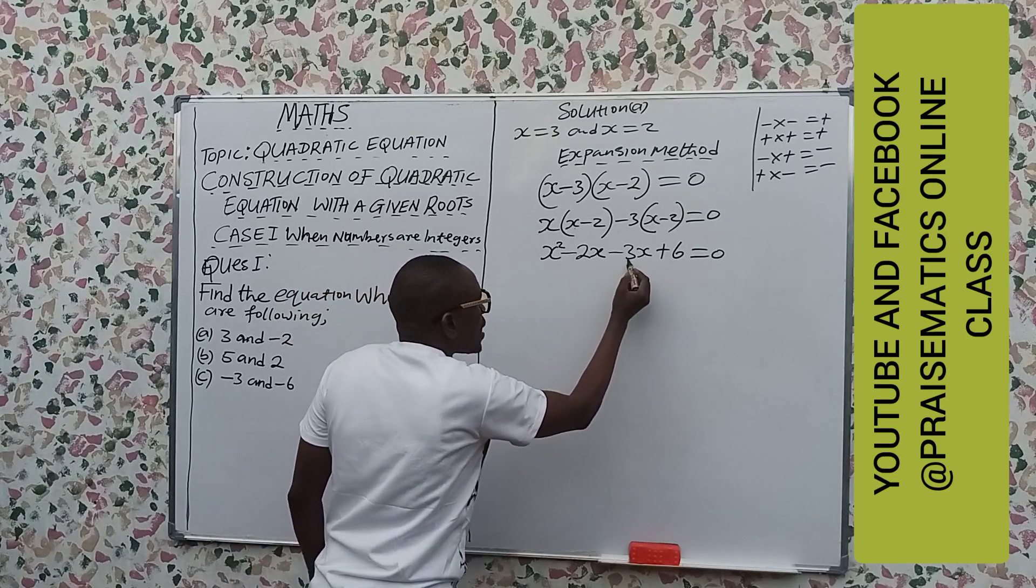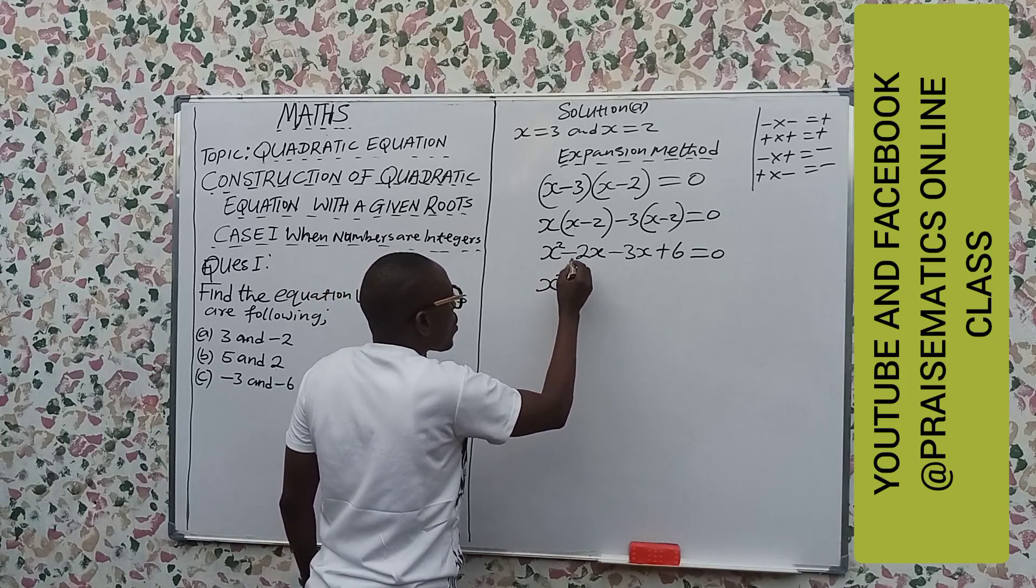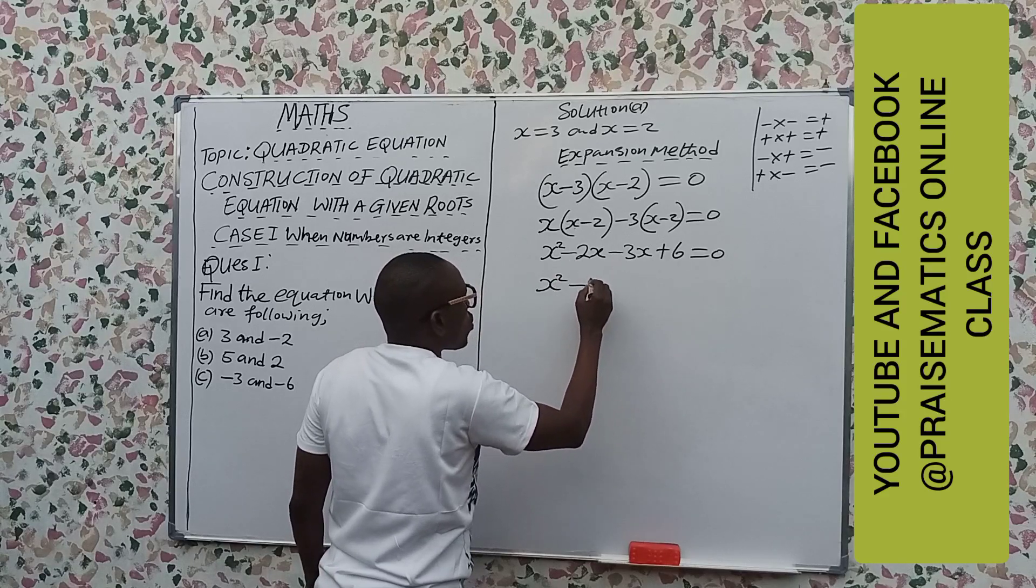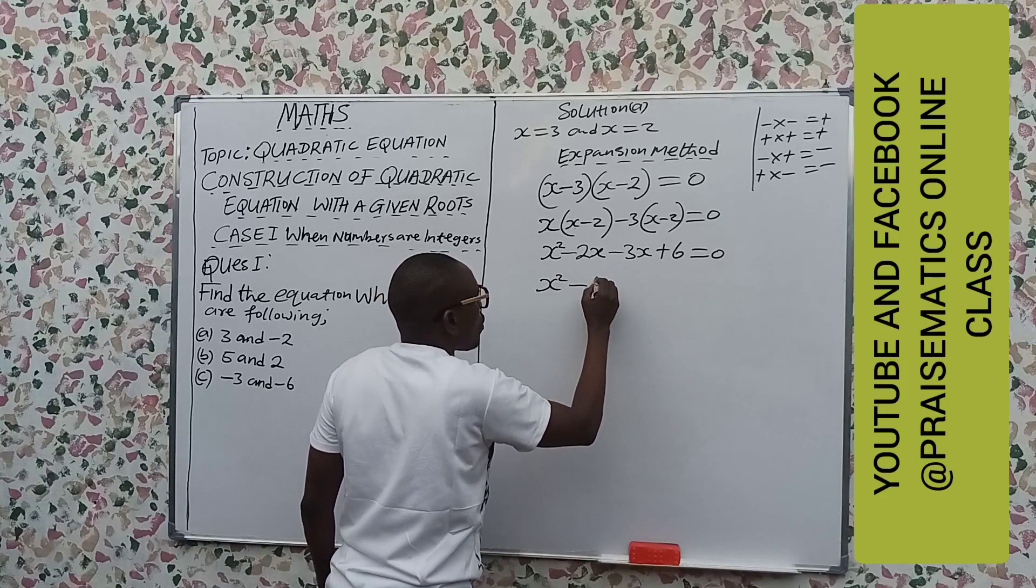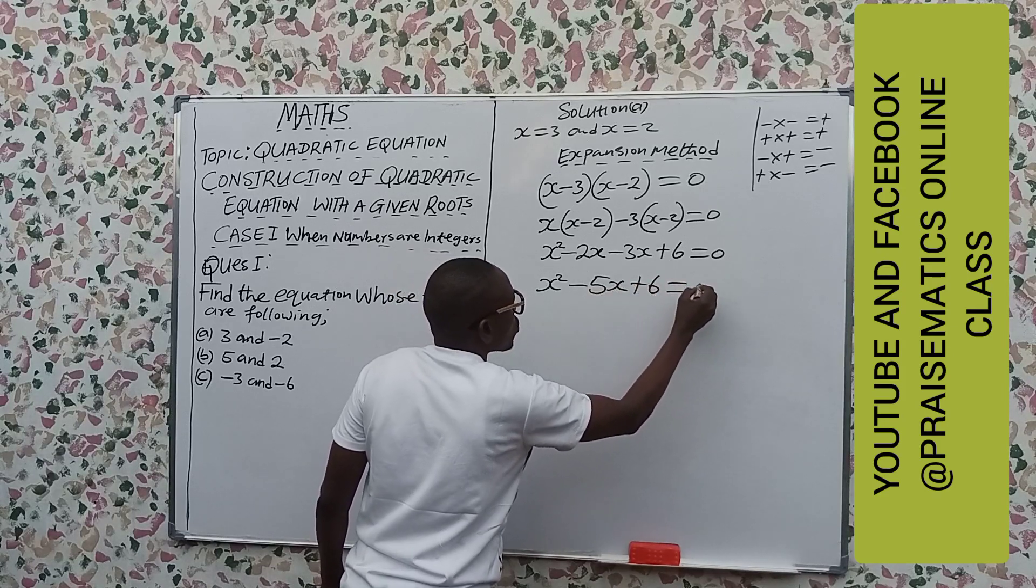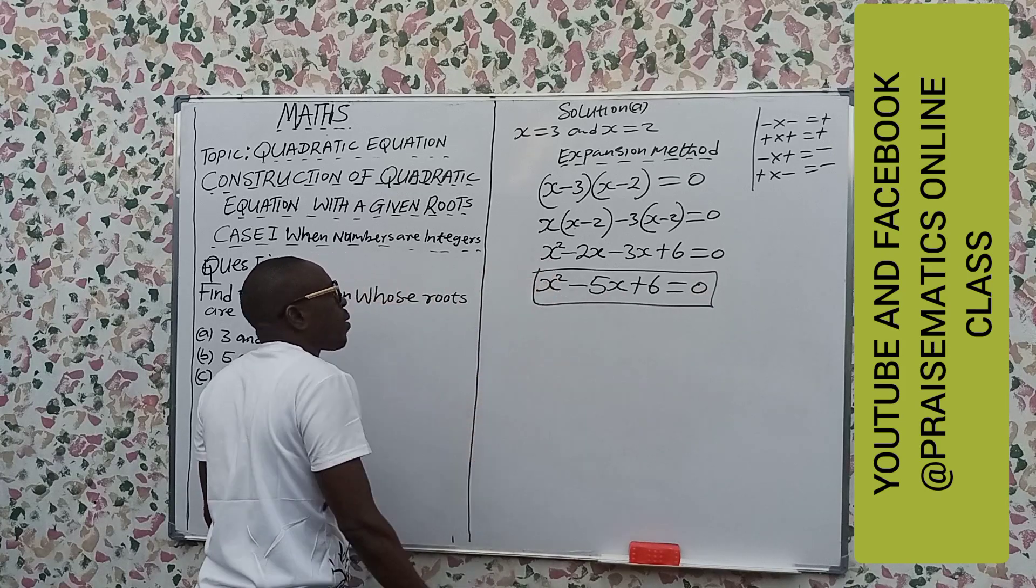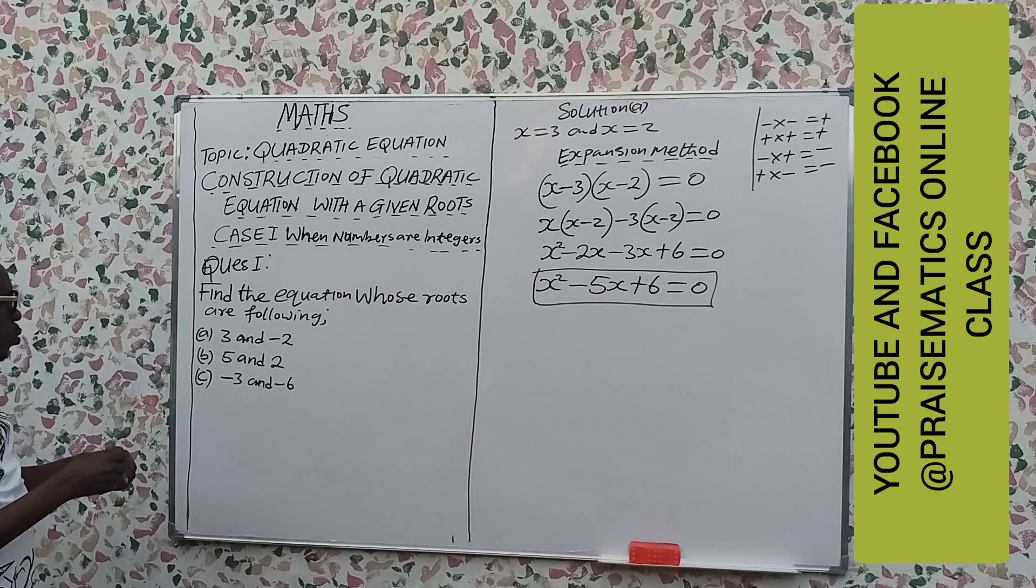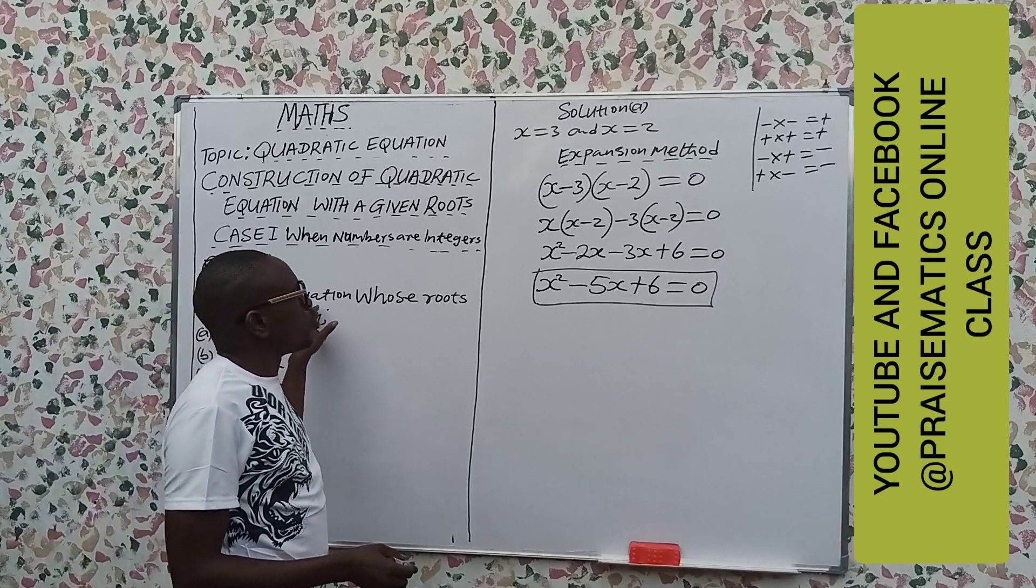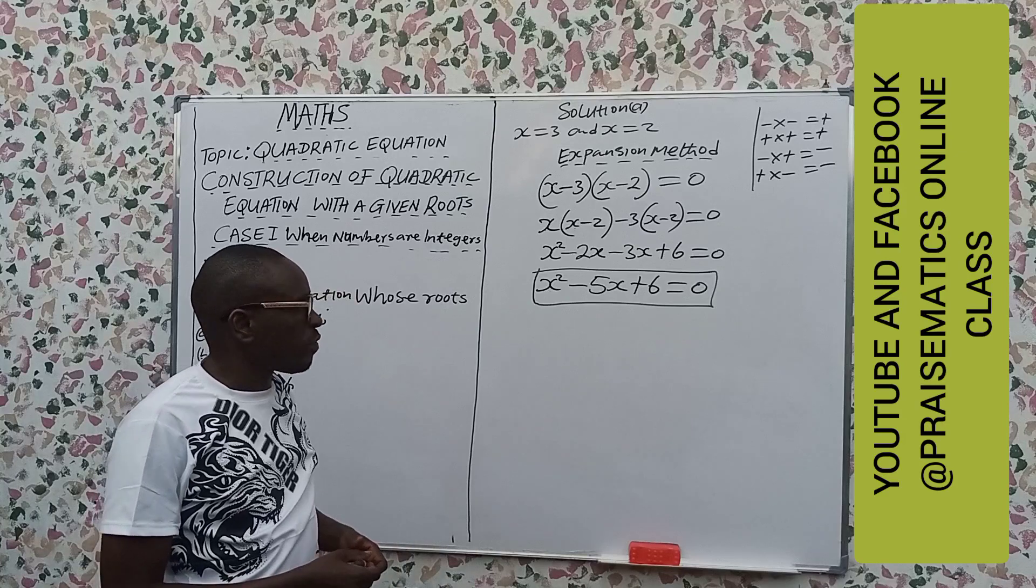This 2x and this 3x are the same. What do we do? x squared minus 2 minus 3 will give us minus 5x plus 6 equal to 0. We have formed the quadratic equation. So this is our quadratic equation. This is the equation whose roots are 3 and minus 2. And that is how to solve it.